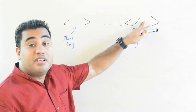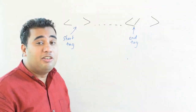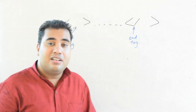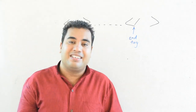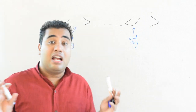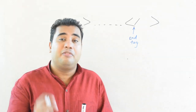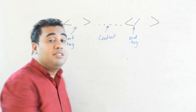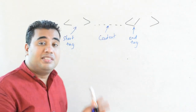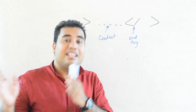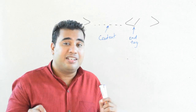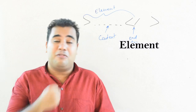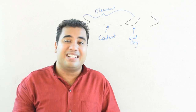We denote the end tag with a slash within the angular brackets. These angular brackets represent a tag in HTML, and within most of these tags we have content. The combination of the start tag, the content, and the end tag is called an element.